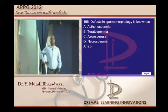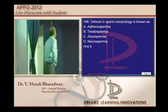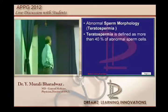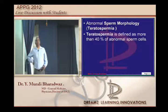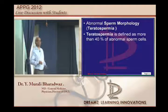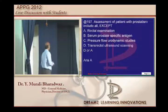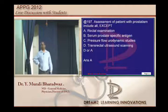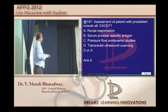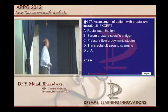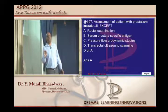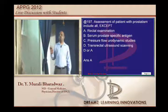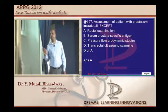This is a challenging question on sperm morphology. Teratospermia is defined as more than 40% of abnormally appearing sperms. Regarding prostatism — physical examination generally does not have a positive role in finding things in prostatism.